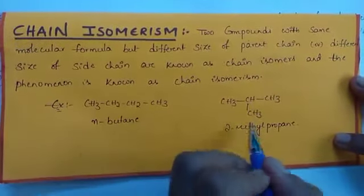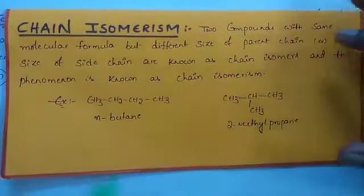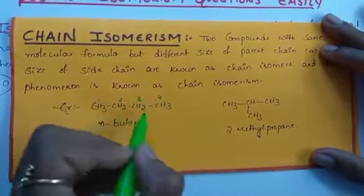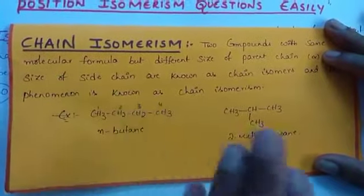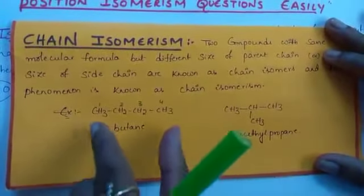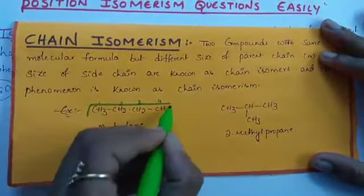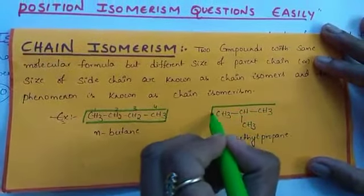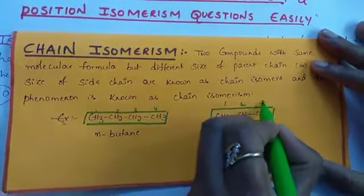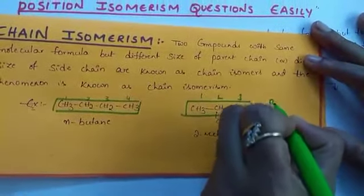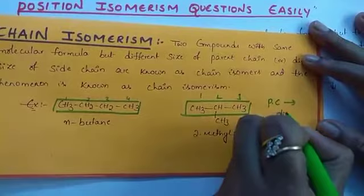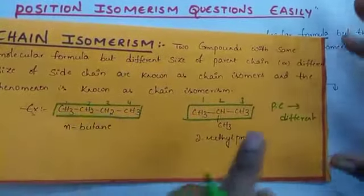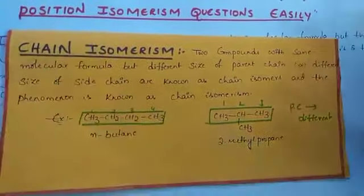Example: normal butane and 2-methylpropane. In normal butane, counting the carbons: 1, 2, 3, 4 — the parent chain has 4 carbons. The parent chain is the longest chain that includes any functional group. In 2-methylpropane, the longest chain has 3 carbons. Since the parent chain is different — 4 versus 3 — these two are chain isomers. If the parent chain or side chain is different, those two are chain isomers.